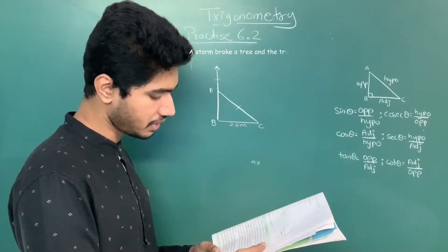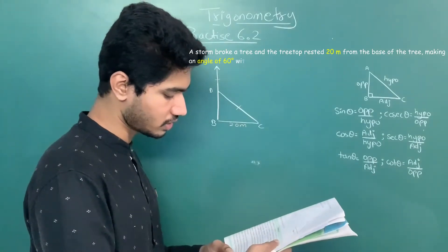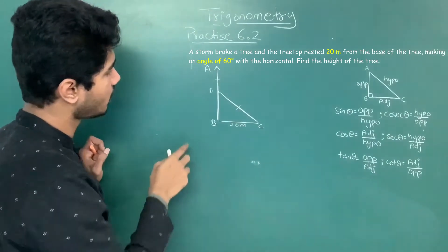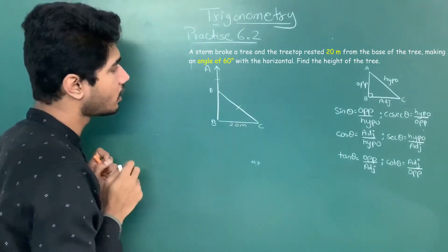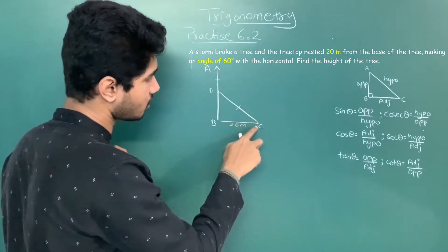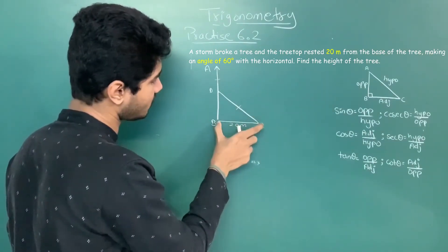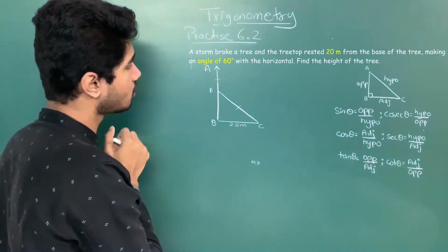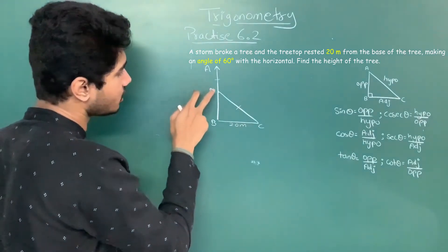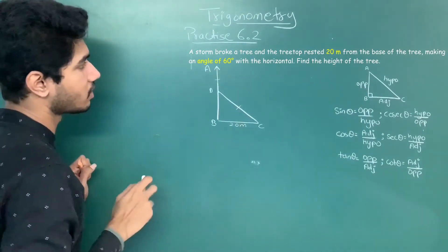Next question: a storm broke a tree and the treetop rested 20 meters from the base of the tree, making an angle of 60 degrees with the horizontal. Find the height of the tree. AB is the height of the tree. According to the question, the tree is broken and the treetop is touching the ground at 20 meters from the base.